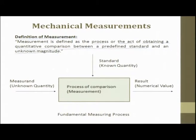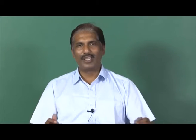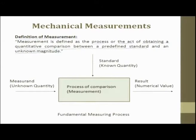The definition of measurement is defined as a process or the act of obtaining a quantitative comparison between a predefined standard and an unknown magnitude. A comparison always happens between two or many. That means I have a standard with me; you give me an object where I have to measure that physical variable — I do not know what the magnitude is. With the known standard, I try to measure the unknown magnitude of the variable and perform the measurement.